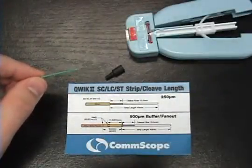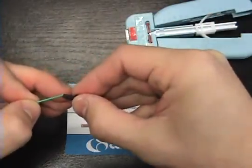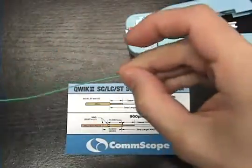Today we will terminate the LC version of the CommScope Quick Connector 2. First, we can slide the boot onto the fiber and out of the way.